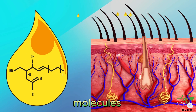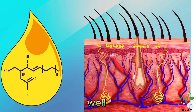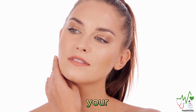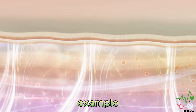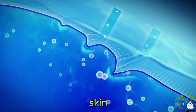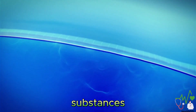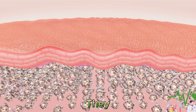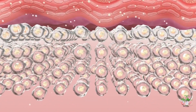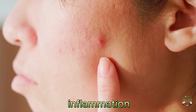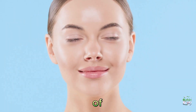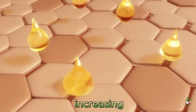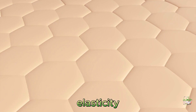Ceramides are a type of fat molecules found in the outer layer of your skin as well as in some foods and supplements. They have several roles in maintaining your skin health and preventing diseases. For example, they help form a protective barrier on your skin that prevents water loss and keeps out harmful substances such as bacteria, viruses, allergens and pollutants. They also help regulate the production of oil and sebum on your skin, which can affect acne and inflammation. They can also improve the appearance of aging skin by reducing wrinkles, sagging and discoloration, by increasing the hydration and elasticity of your skin.